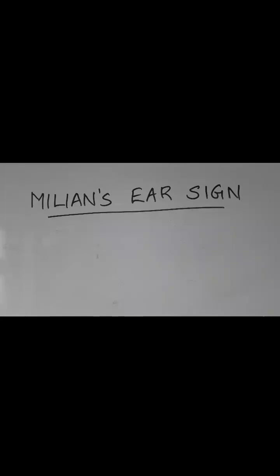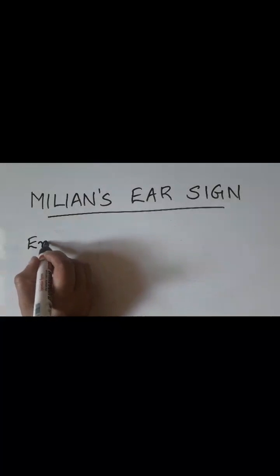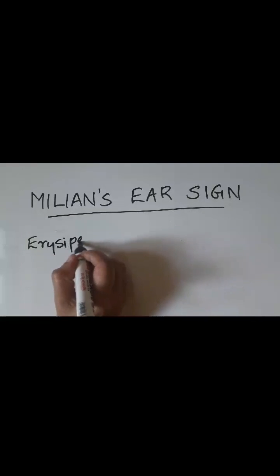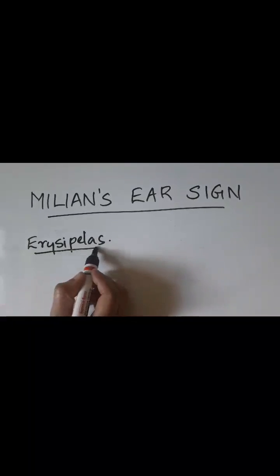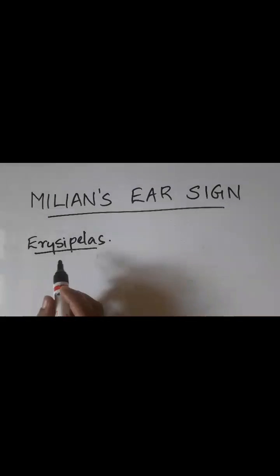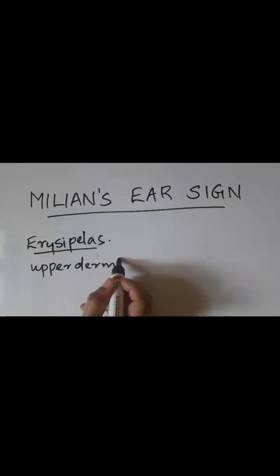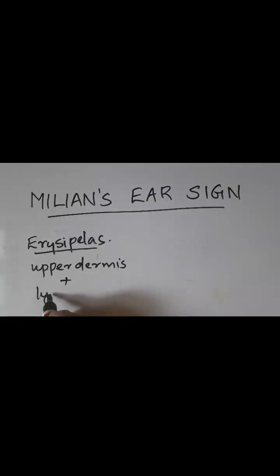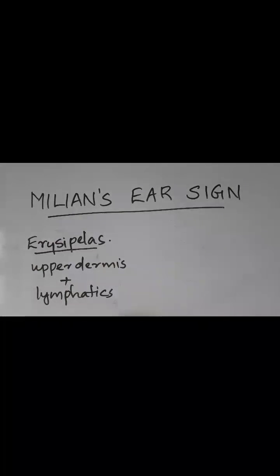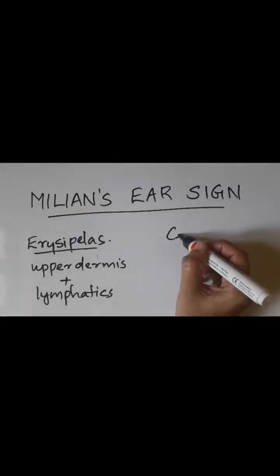Millions ear sign is a sign of auricular involvement in infection, and this sign is used to differentiate cellulitis of the face from facial erysipelas. Erysipelas is a common infection that involves the upper dermis and the lymphatics, so it is basically a cutaneous lymphangitis. Cellulitis, on the other hand,